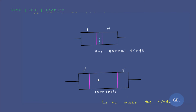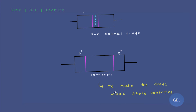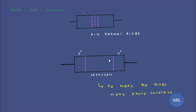Why are we leaving so much space between the p-plus and n region? Because in photo detector applications, the speed of response is important. To increase photo detector sensitivity, the depletion layer should be made as large as possible. In simple words, in order to increase the photo sensitivity of the diode, we need to keep the depletion width as maximum as possible.